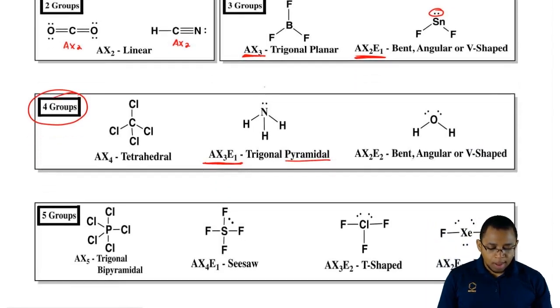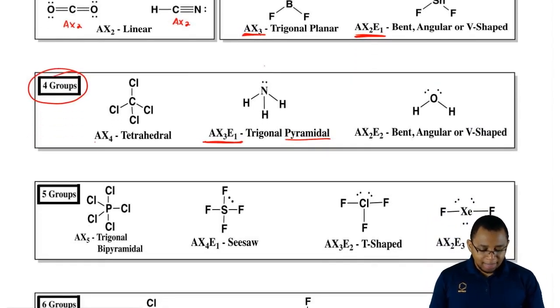If we have four groups around the central element, we could have AX4 where it has no lone pairs, we could have AX3E1, or we could have AX2E2. And again AX2E2 is just like AX2E1, it would be classified as bent, angular, or V-shaped.